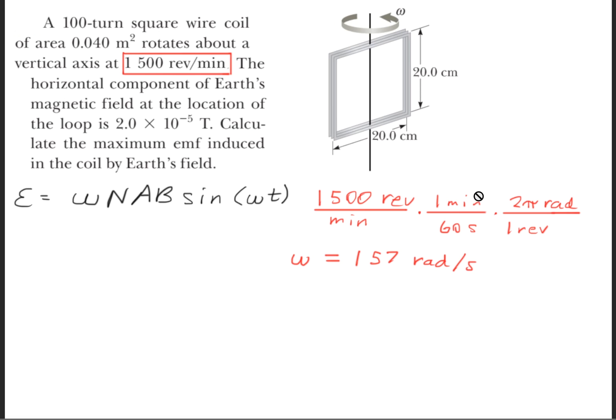So these units of minutes cancel out, and the revolution units cancel out, leaving us with an angular velocity of 157 radians per second.